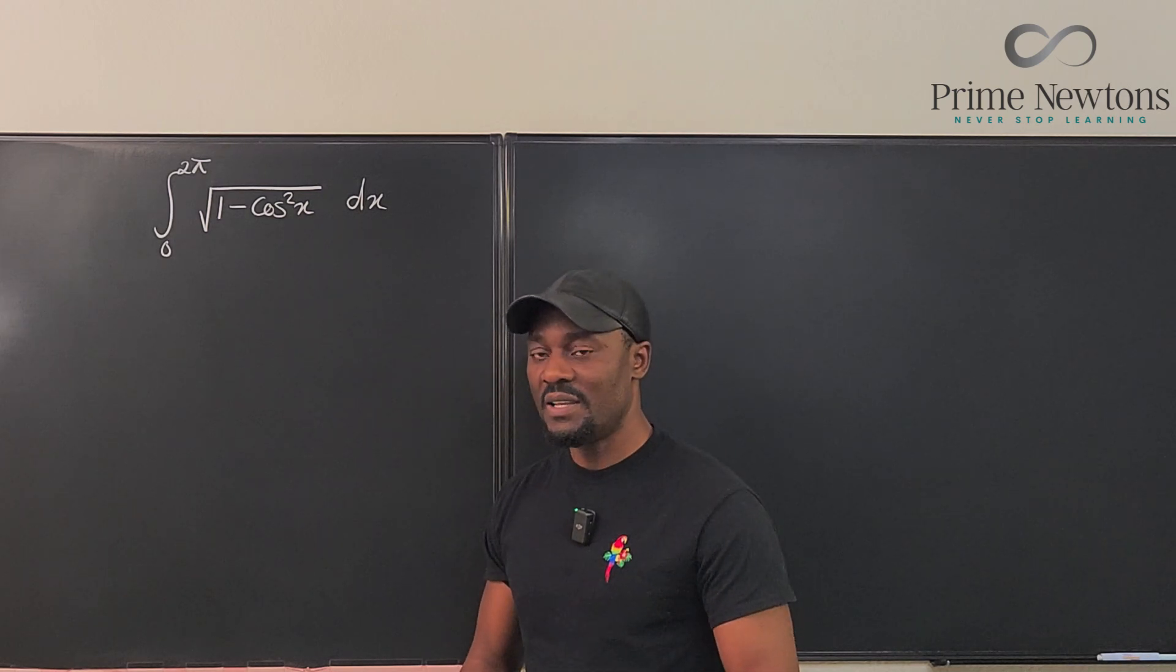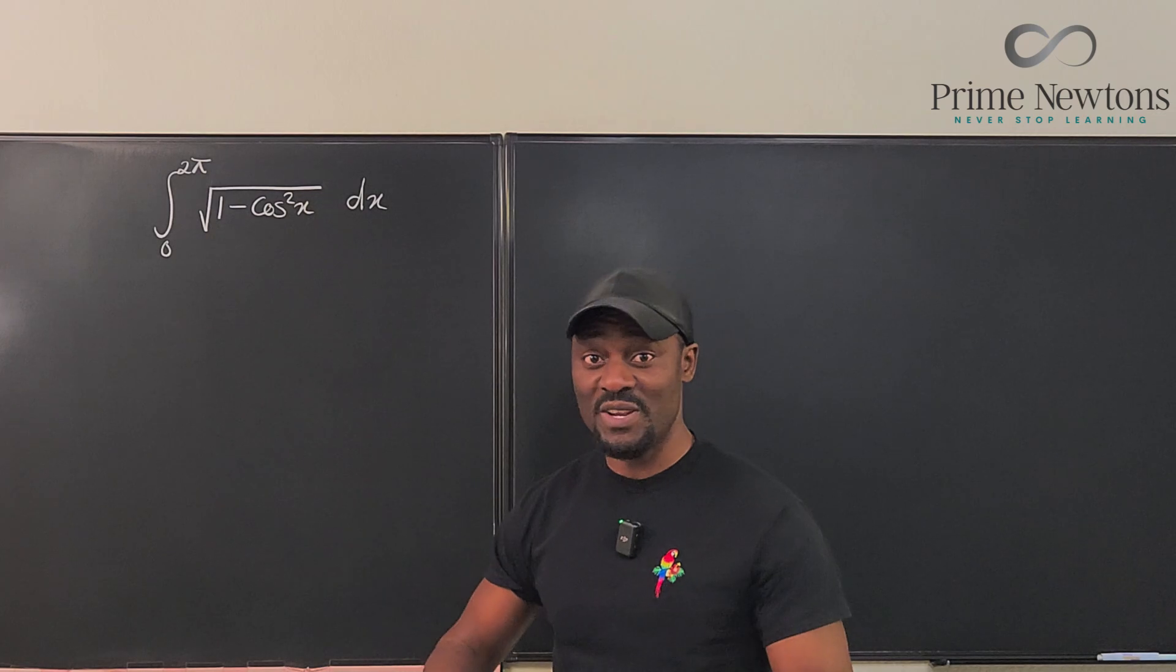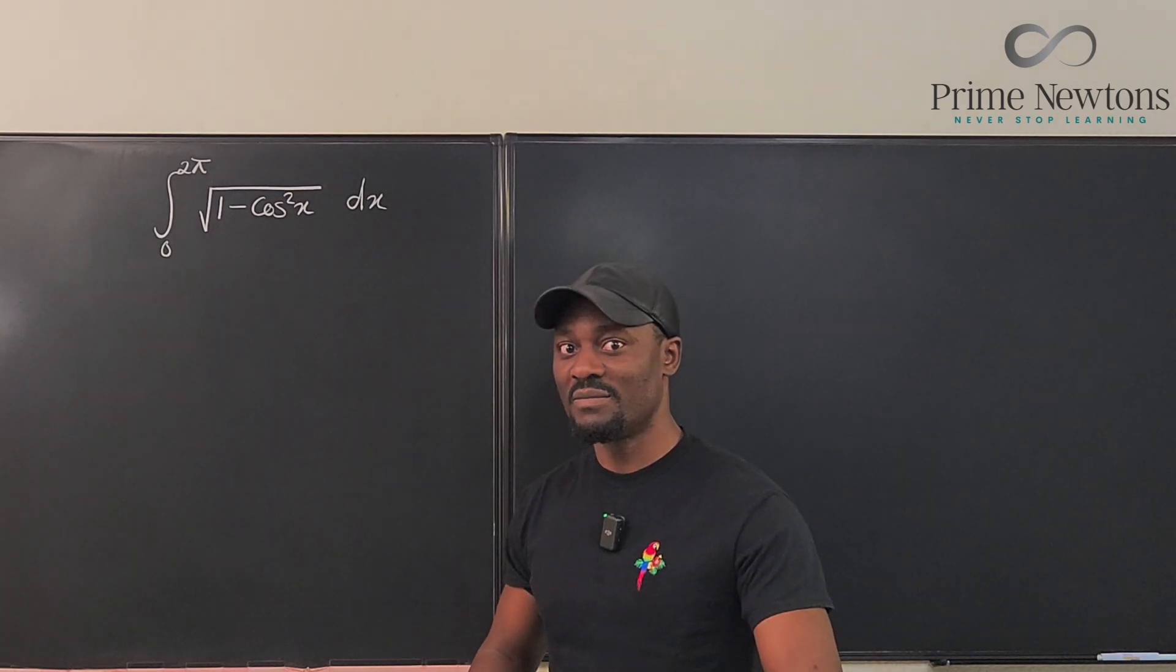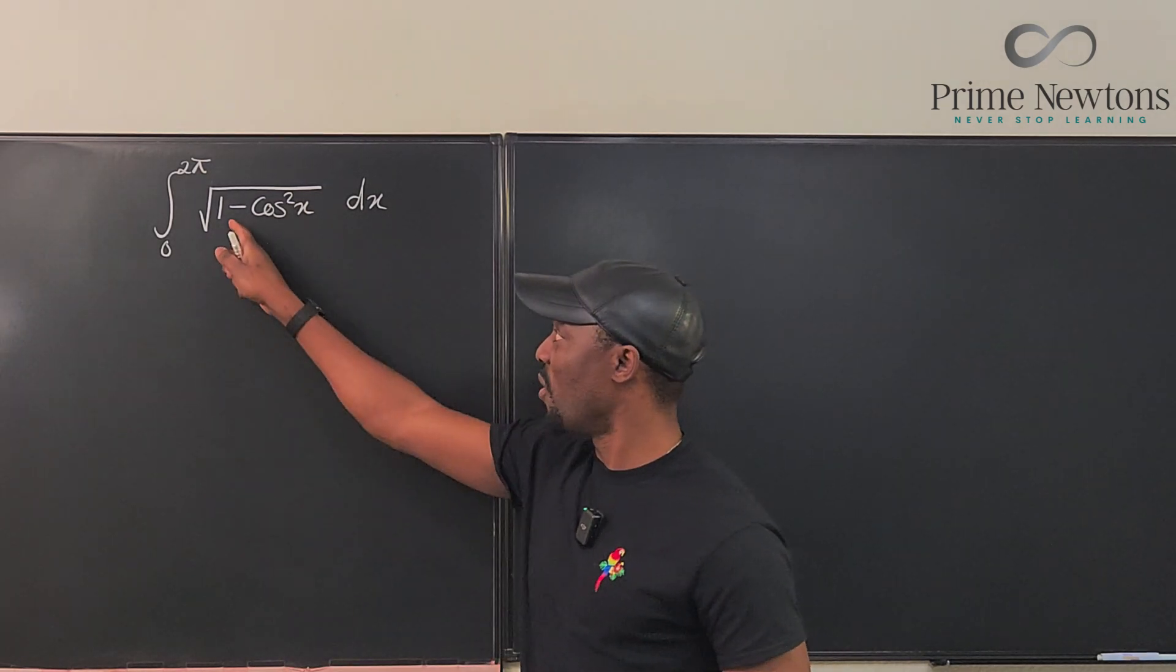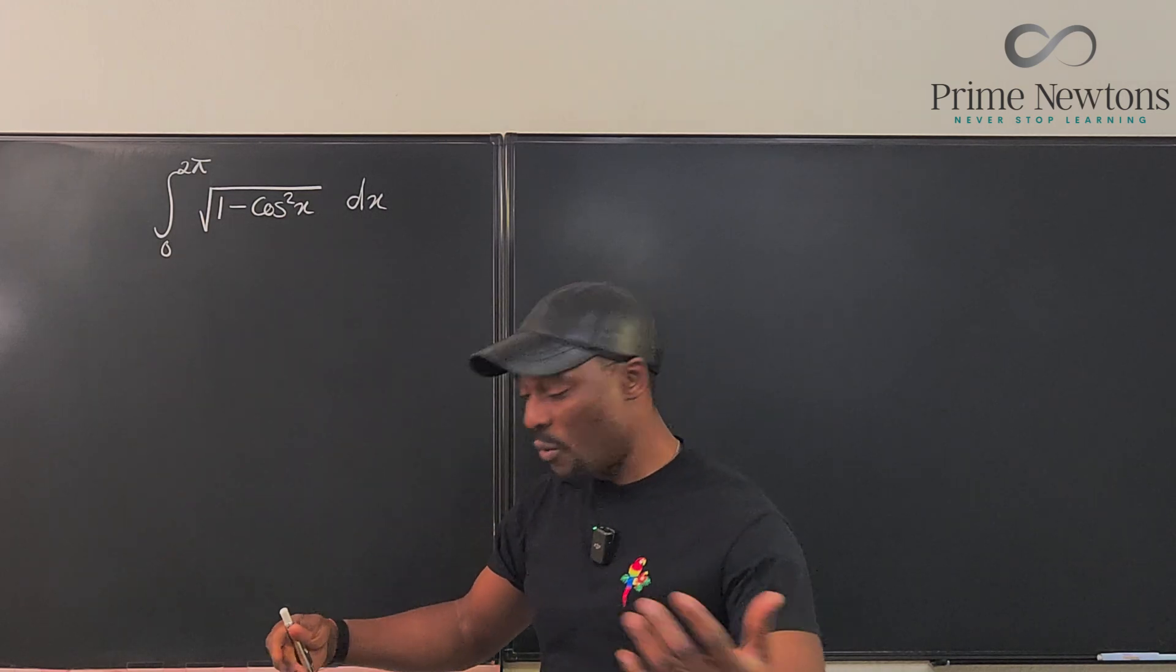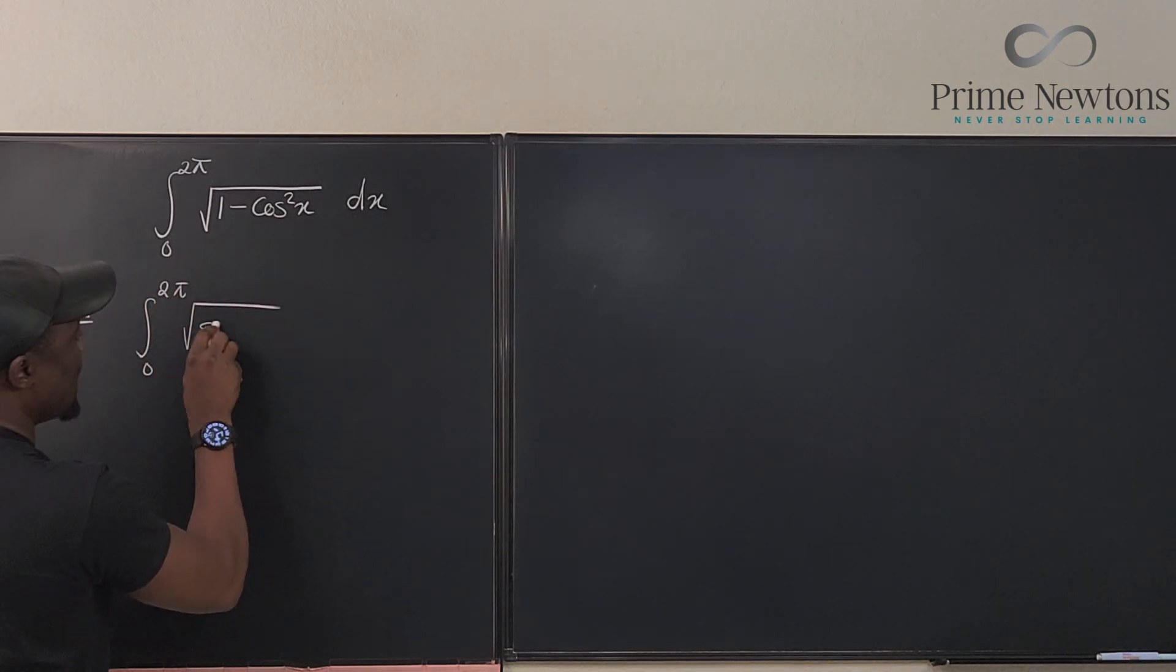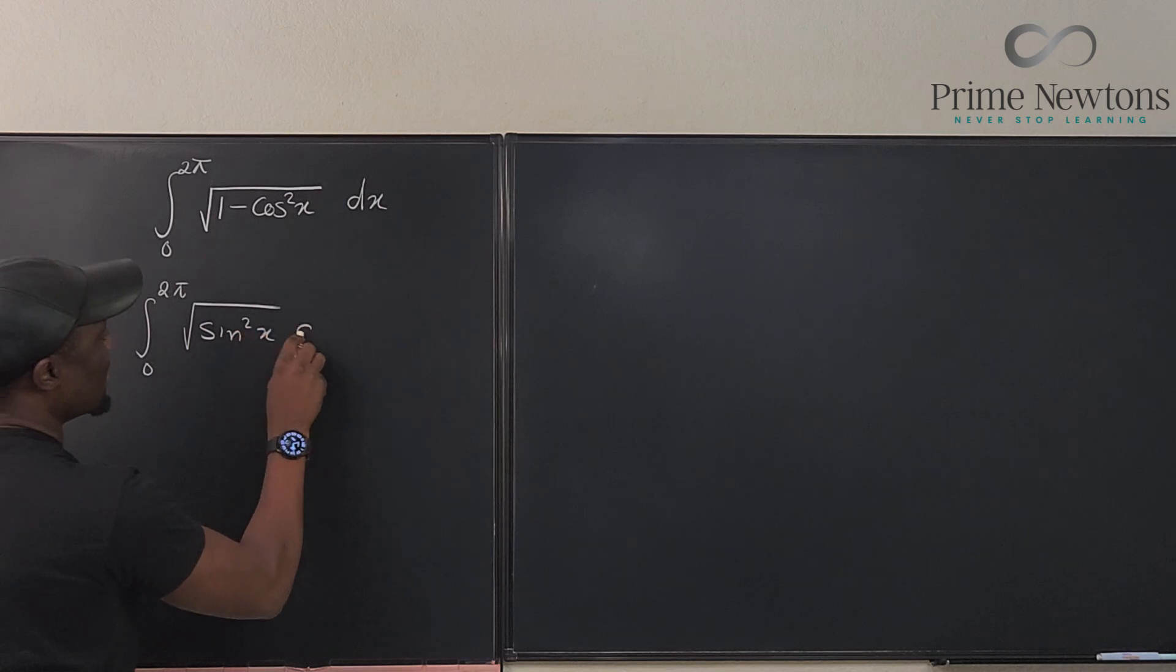So typically a student would see this problem and immediately the Pythagorean identity shows up, because you know that 1 minus cosine squared x is sine squared x. So what we do is we say this is equal to the integral from zero to 2π of the square root of sine squared x dx.